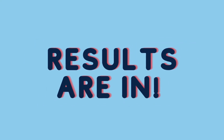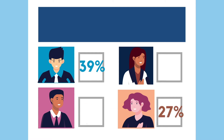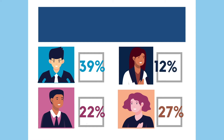The results come in. Alex has 39% of the vote of the student body, assuming everybody votes. Denise has 27% of the vote, Brian has 22% of the vote, and Cassie has 12% of the vote.